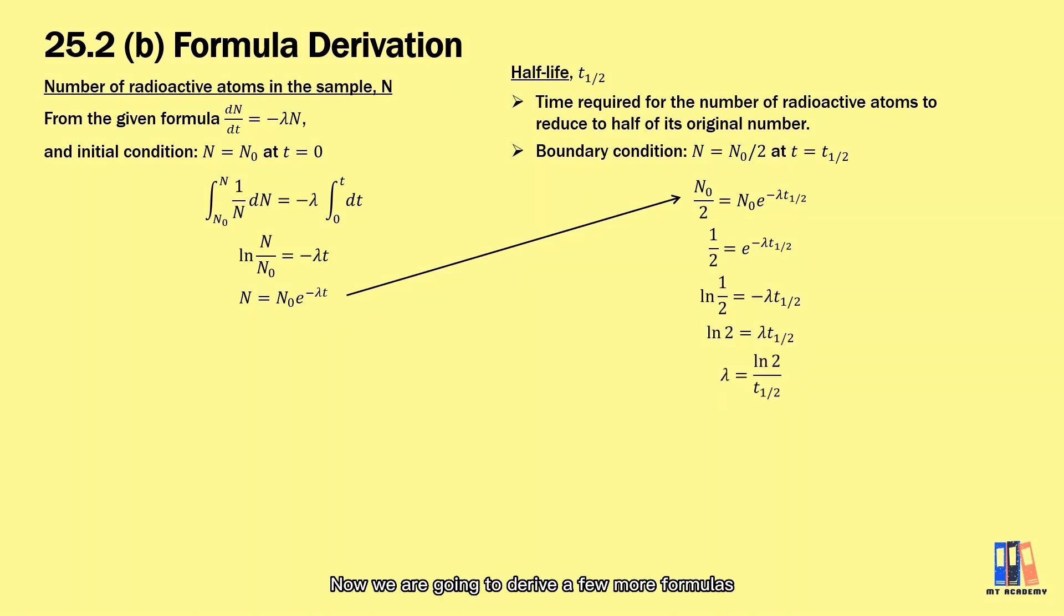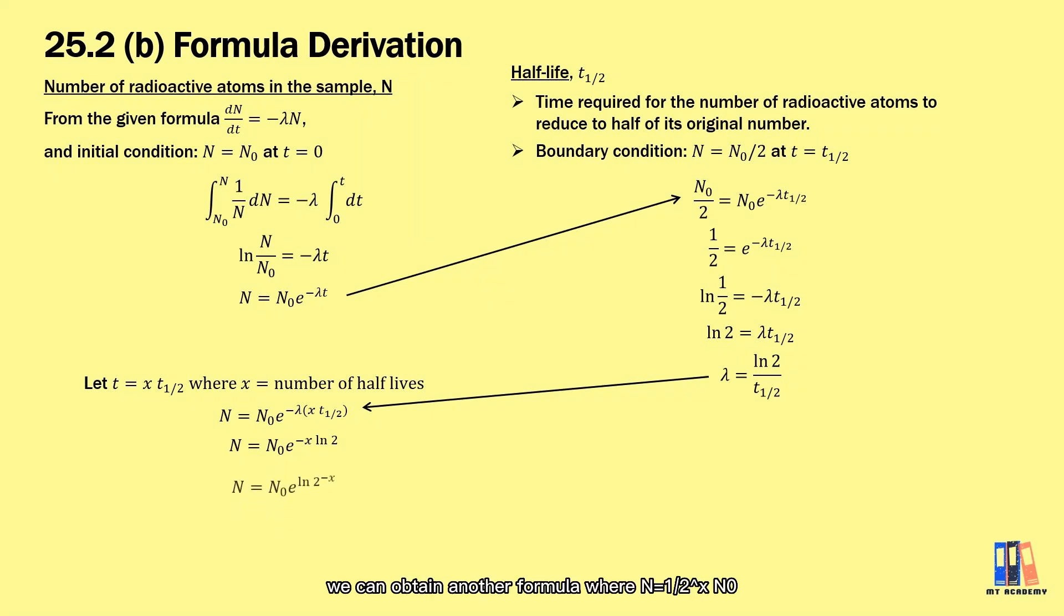Now we are going to derive a few more formulas. I think there is one formula we can remember that the total time t can be expressed as multiple of half-life. Here we can put the formula into the equation of N, and based on the formula of decay constant, we can obtain another formula where N = ½^x N₀, where x is the number of half-lives.